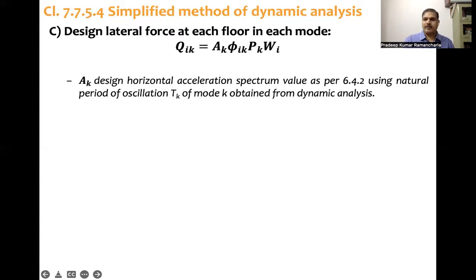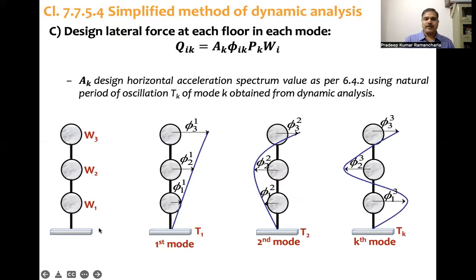Ak is the design horizontal acceleration spectrum value. How do we get this design acceleration spectrum value? For this mode k, ωk, we need to find the frequency of that mode, convert that into natural period, and then check the sa/g value, the acceleration coefficient.